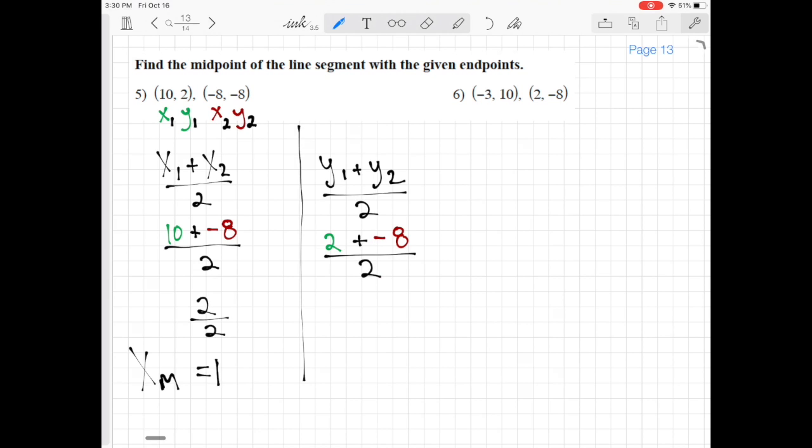So 2 plus negative 8 gives us negative 6 divided by 2. 6 divided by 2 is 3, so negative 6 divided by 2 gives us negative 3. And that's the y-coordinate of our midpoint.